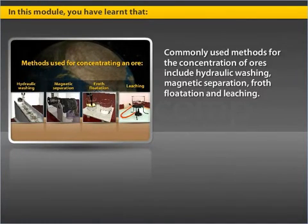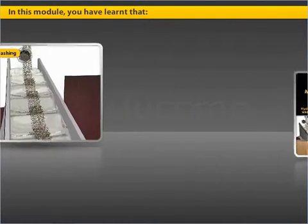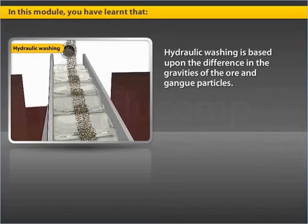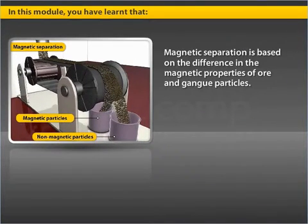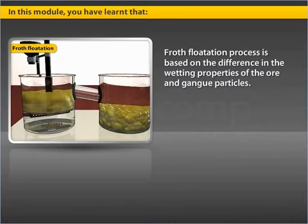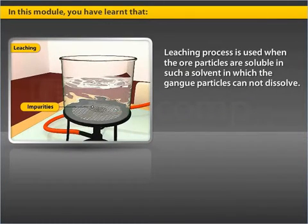Commonly used methods for the concentration of ores include hydraulic washing, magnetic separation, froth flotation, and leaching. Hydraulic washing is based upon the difference in the gravities of the ore and gangue particles. Magnetic separation is based on the difference in the magnetic properties of ore and gangue particles. The leaching process is used when the ore particles are soluble in a solvent in which the gangue particles cannot dissolve.